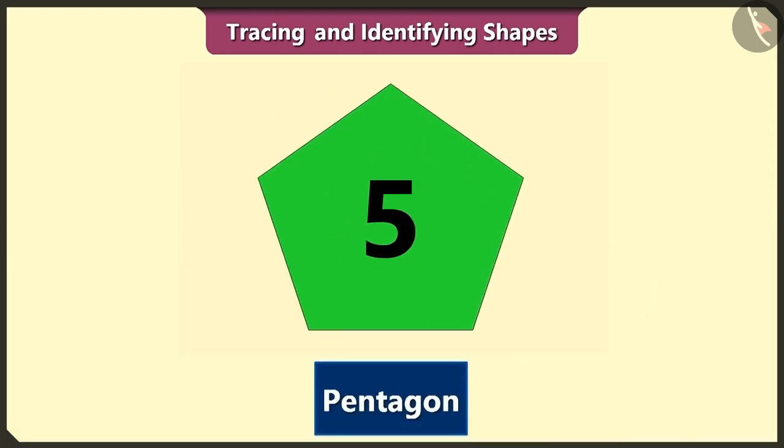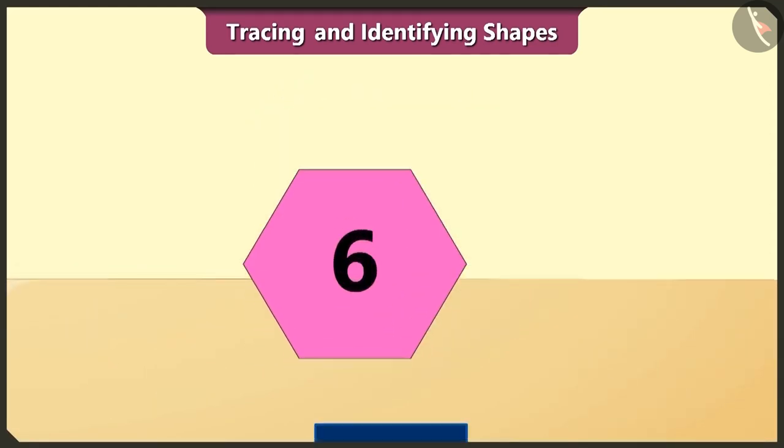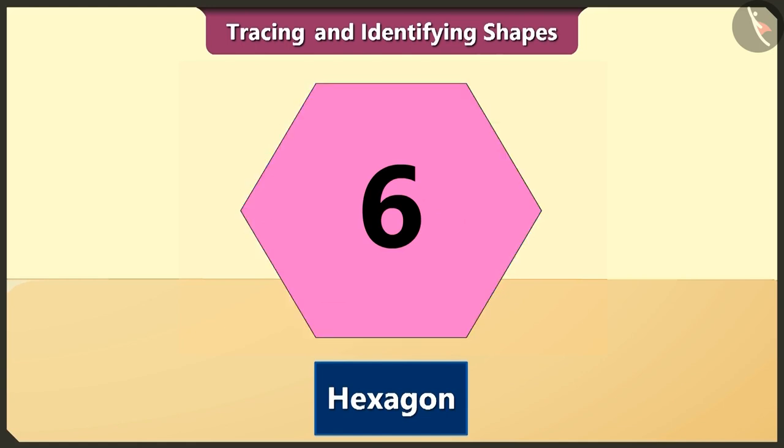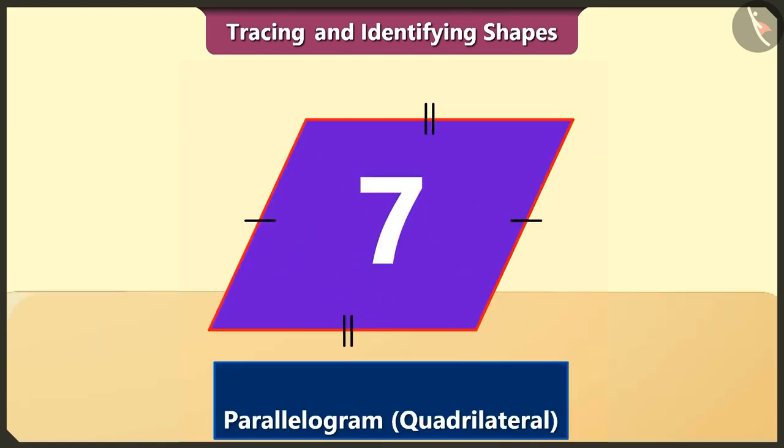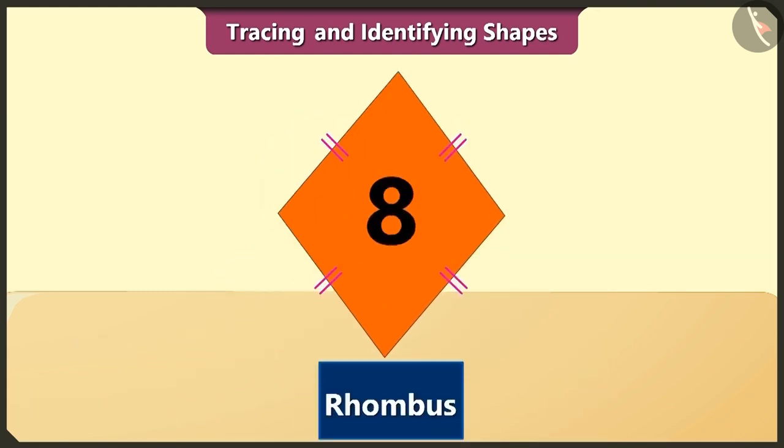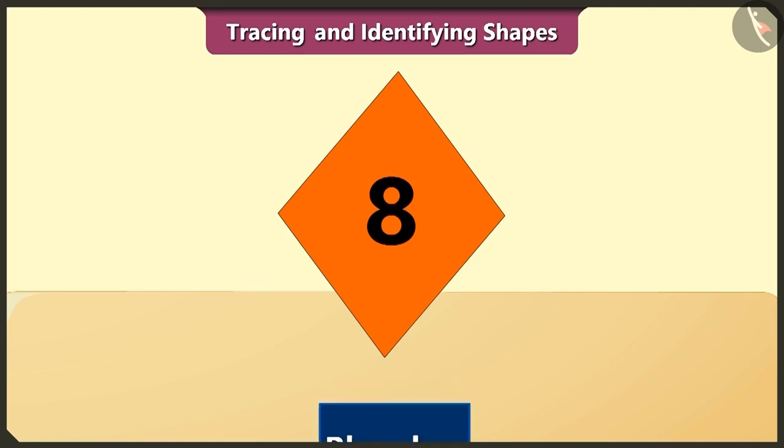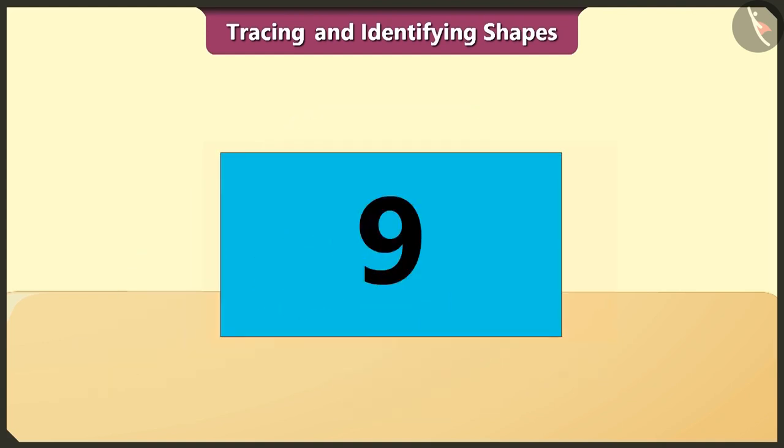The five-sided pentagon is fifth in order. The six-sided hexagon is sixth in order. The four-sided quadrilateral is seventh in order. The four-sided rhombus is eighth in order.